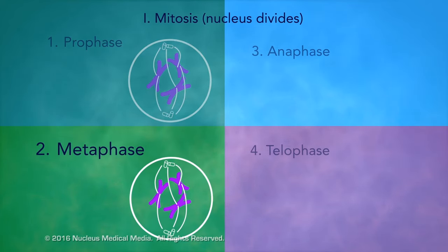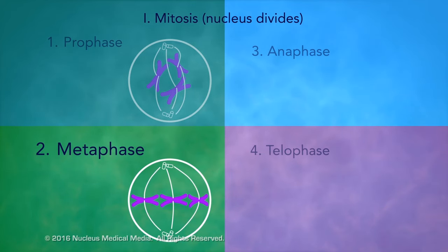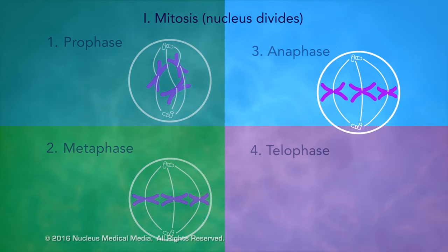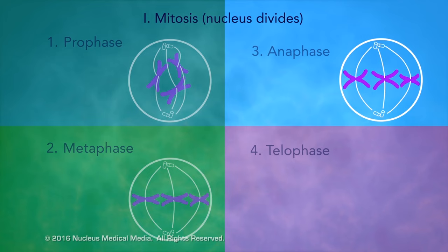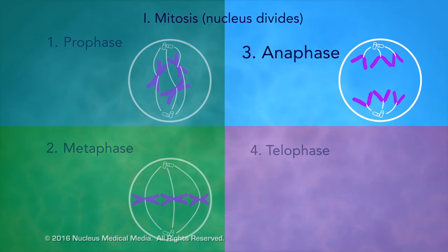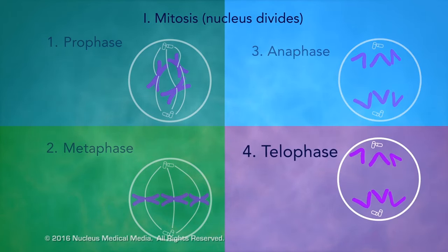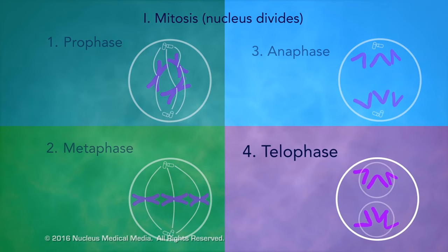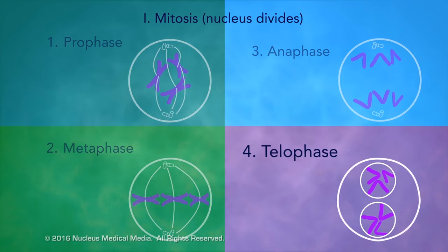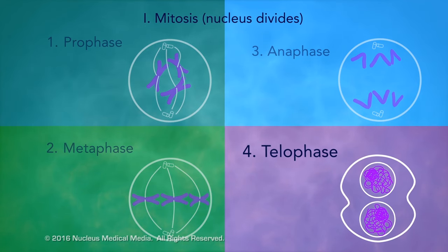During metaphase, spindle fibers align the chromosomes along the cell equator. In anaphase, the spindle fibers separate sister chromatids into two separate groups of chromosomes, pulling them toward the poles. And in telophase, the nucleolus and nuclear membrane reform, and the chromosomes disperse into chromatin.